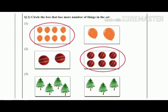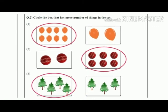Question number three: there are two pictures of trees. On the left hand side there are four trees and on the right hand side there are three trees. So which picture has more trees? Correct — the left picture has more trees in it, so we are going to circle the left picture. Very good.